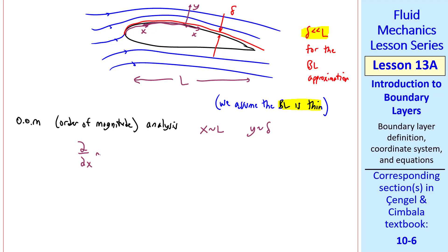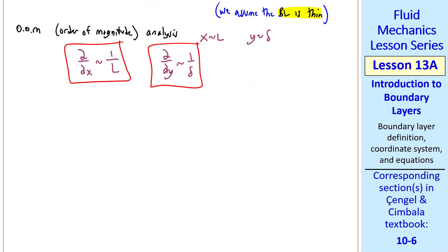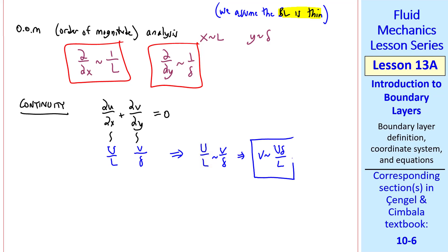In our Navier-Stokes and continuity equations, del/del x will be of order of magnitude 1 over L, and del/del y is of order of magnitude 1 over delta, since the speed changes rapidly through the boundary layer. Starting with the continuity equation for steady, incompressible, two-dimensional flow, the order of magnitude of the first term is capital U over L. We don't know the order of magnitude of velocity component V, but del/del y is order of magnitude 1 over delta. Since these two terms must balance, V is order of magnitude U delta over L.